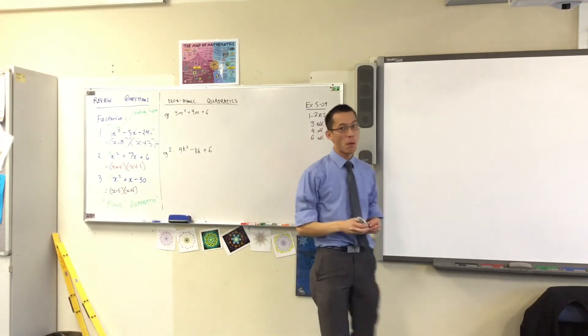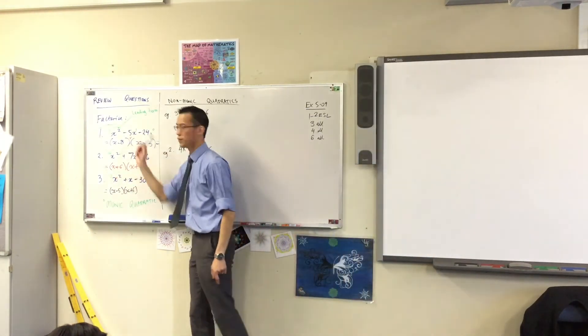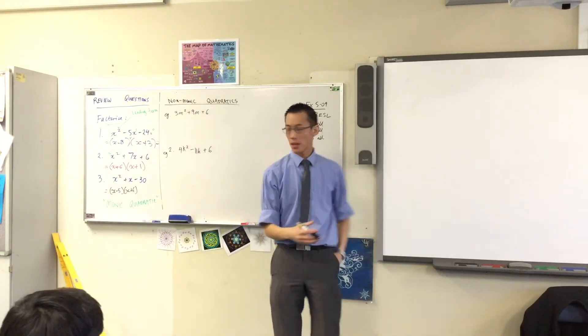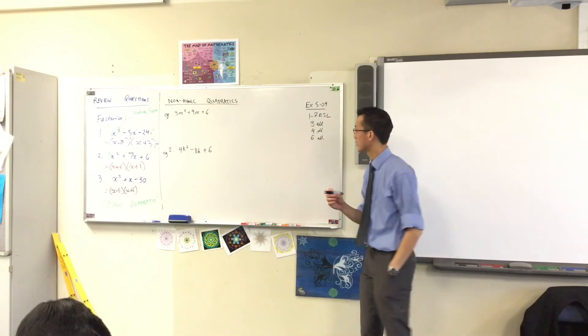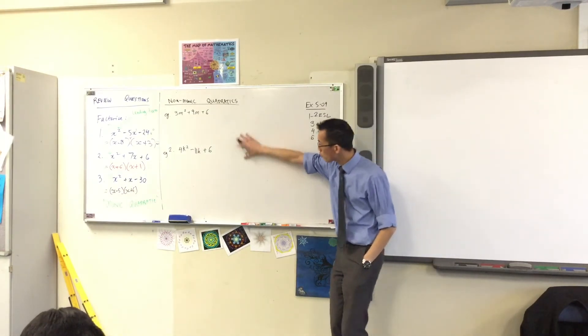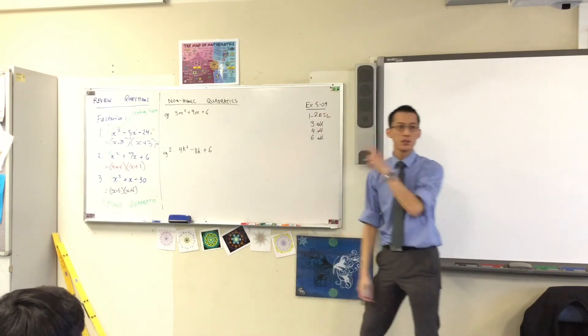So, dealing with monic quadratics is pretty straightforward. You're thinking of this pair of numbers. You've demonstrated you're really good at that. For non-monic ones, it's a teeny bit more complicated. There are two broad categories, which is why I've got two examples that I want to show you here. Let's have a look at the first one. It's non-monic.